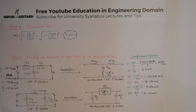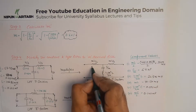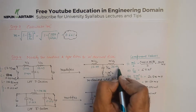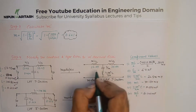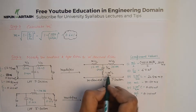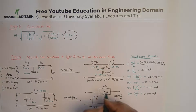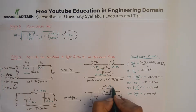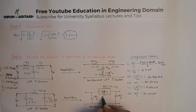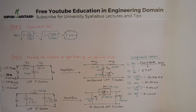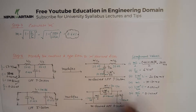Having determined all the component values, the final step is to show the m-derived low pass filter T section by substituting these values. The 35.09 millihenry inductance goes into the series arm, and similarly 35.09 millihenry goes into the other arm. C/m equals 0.641 microfarad, and the additional inductor L has a value of 22.596 millihenry. With these values substituted, the solution to the problem is complete.